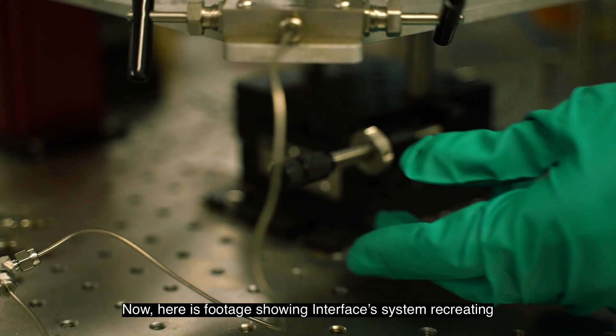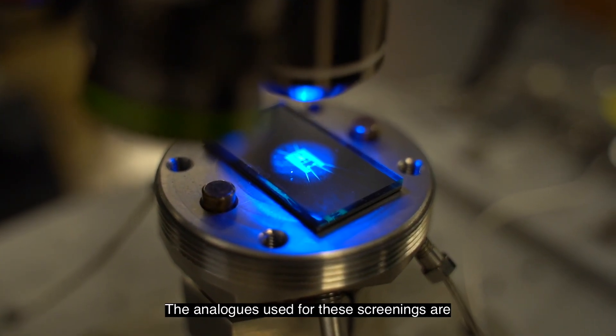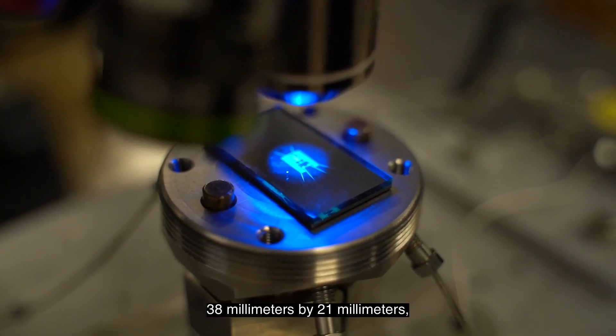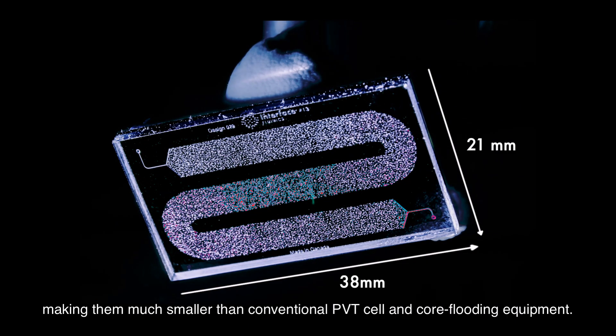Now, here's footage showing Interface's system recreating this immense pressure in a lab setting. The analogs used for these screenings are 38 millimeters by 21 millimeters, making them much smaller than conventional PVT cell and core flooding equipment.